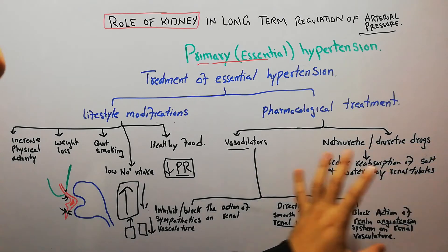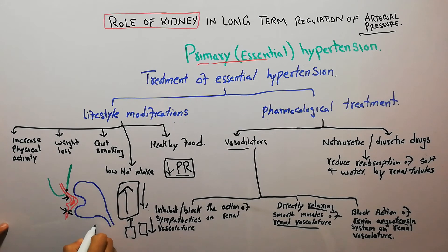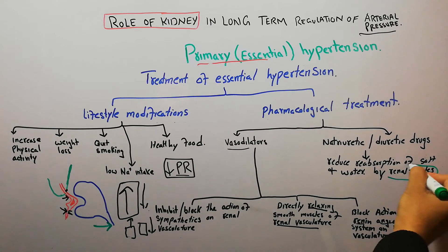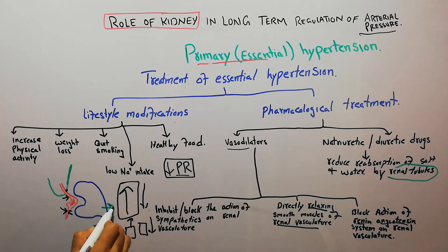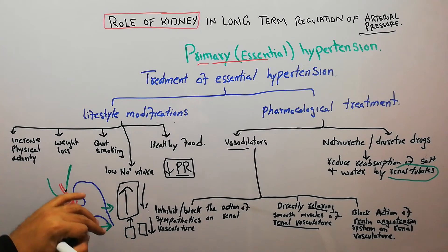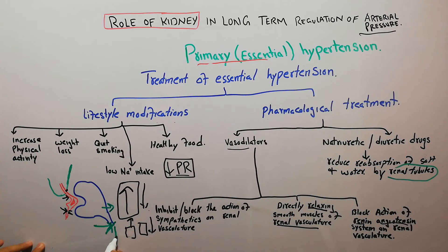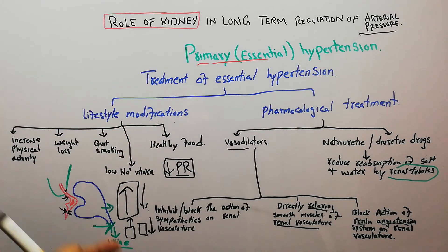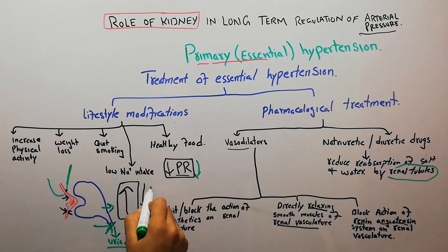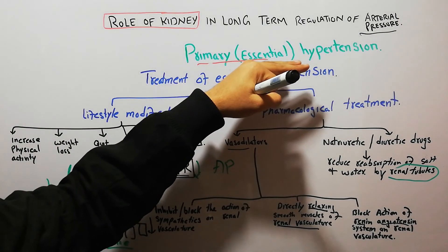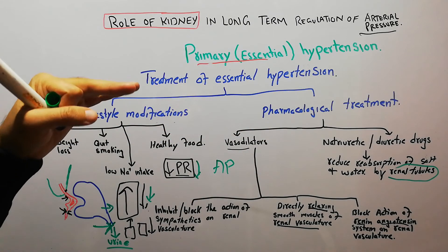Natriuretic or diuretic drugs simply prevent the reabsorption of salt and water into the renal tubule. Once salt and water are filtered, they are normally reabsorbed; by preventing this reabsorption, salt and water go into the urine. This decreases fluid volume, decreases peripheral resistance, decreases cardiac output, decreases arterial pressure, and treats hypertension.